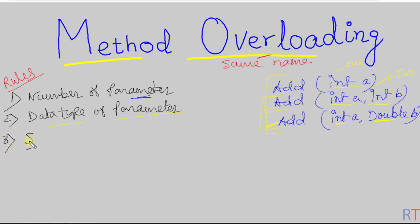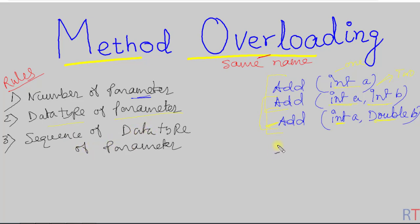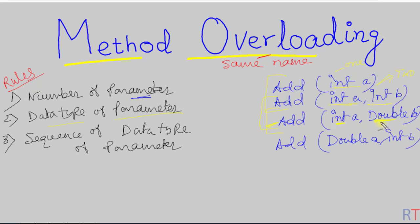We can also overload a method by changing the sequence of data types of the parameters. For example, we can overload another 'add' method where previously it was taking integer then double, and now we change the sequence to double then integer. This way we can also overload the method.